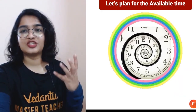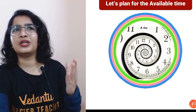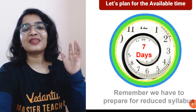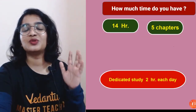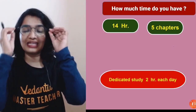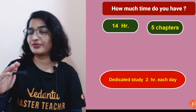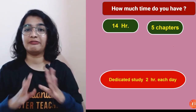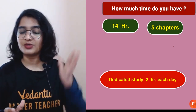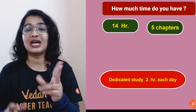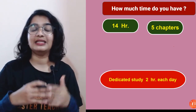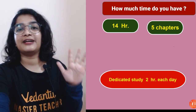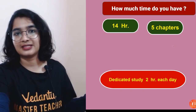You have 24 × 7 hours available, but I would like you to dedicate only 14 hours for chemistry revision. That means just two hours of chemistry per day over seven days — and you can complete all five chapters in those 14 hours.